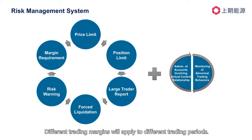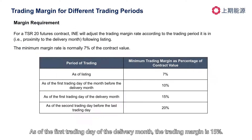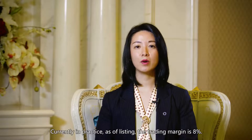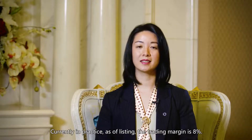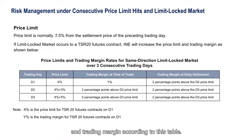Different trading margins apply to different trading periods. As of listing, the minimum trading margin is 7%. As of the first trading day of the month before the delivery month, the minimum margin is 10%. As of the first trading day of the delivery month, the trading margin is 15%. As of the second trading day before the last trading day, the trading margin is 20%. Currently in practice, as of listing, the trading margin is 8%. If there are consecutive price limit hits, INE will increase the price limit and the trading margin accordingly.